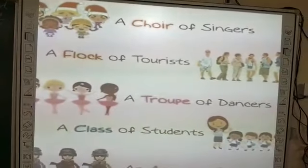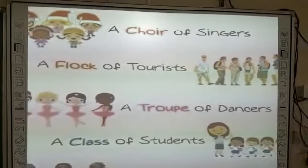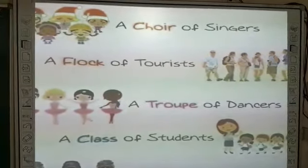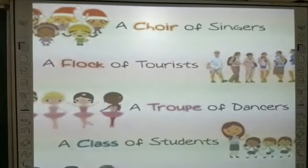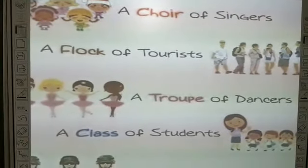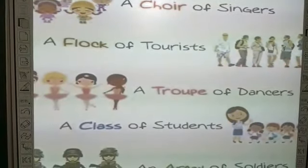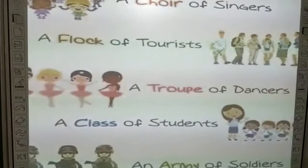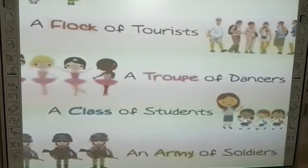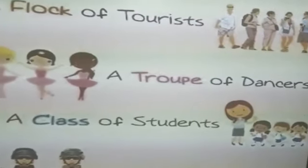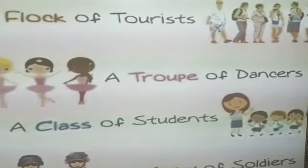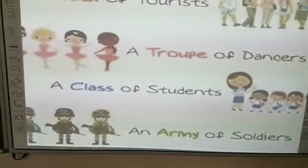Children, see who is there? Yes — singers. Very good. A choir of singers. A flock of tourists. Children, see these girls — what are they doing? Yes, dancing. A troop of dancers. Children, who are they? Teacher and a student. Very good. A class of students. An army of soldiers.